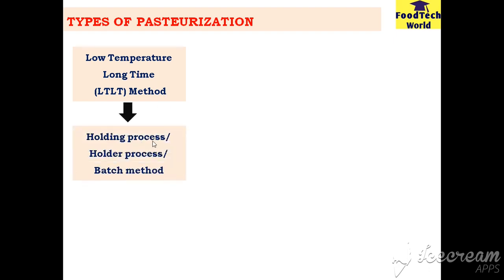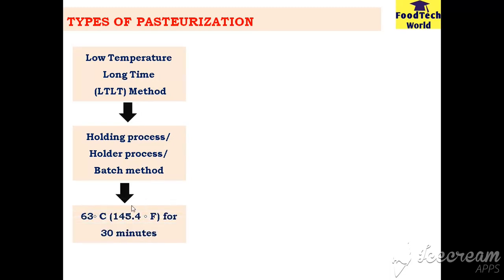The first type of pasteurization is the Low Temperature Long Time method — LTLT. It is also known as the holding or batch method, because it holds a low temperature for a very long time. The temperature required for the LTLT method is 63°C for 30 minutes.